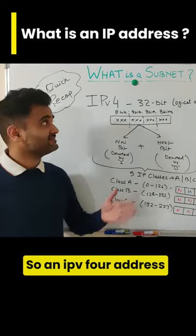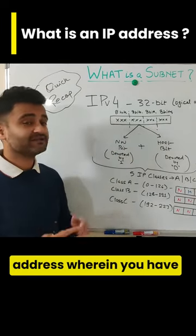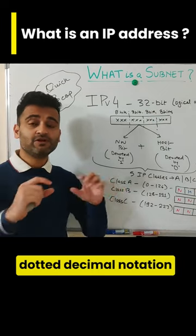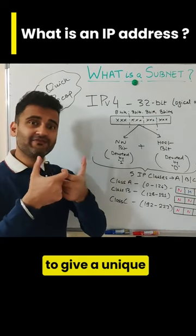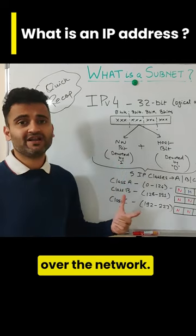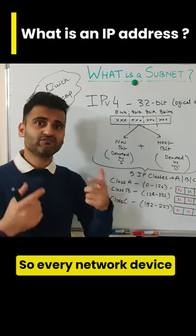An IPv4 address is a 32-bit logical address with dotted decimal notation to give a unique identity to a device over the network. Every network device would have an IP address with which it would be identified uniquely.